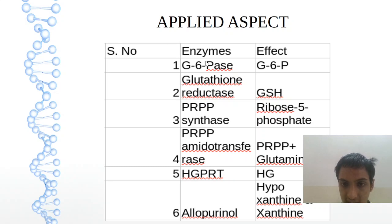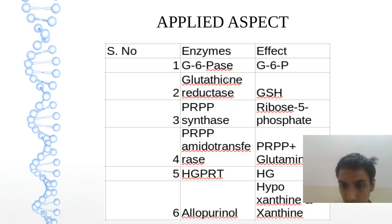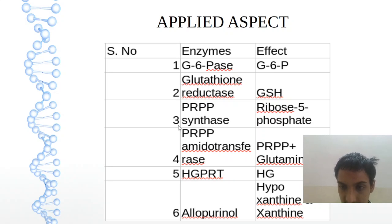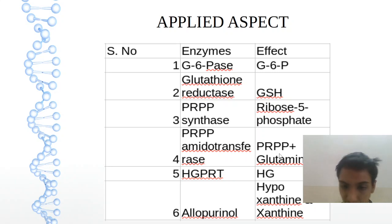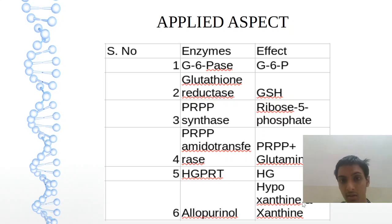G6PD — glucose-6-phosphatase — effect is same as that of the enzyme. Glutathione reductase is related to GSH, that is glutathione. PRPP synthase is for ribose 5-phosphate; the amidotransferase will be for glutamine — PRPP plus glutamine. HGPRT for hypoxanthine and guanine. Then allopurinol acts on hypoxanthine and xanthine.